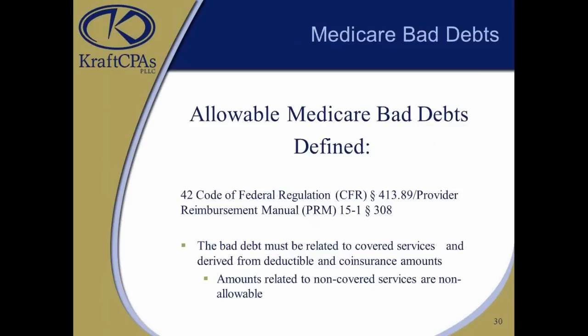Now we're going to go to Medicare bad debts — a hot topic that will continue to be one, given all the budgetary concerns of Medicare cuts. One recommendation from the Simpson-Bowles Act was to reduce reimbursement to 0%. So it's important to know what makes up an allowable Medicare bad debt. There are four criteria. First, it must be related to your covered services — if you get a denied day for a stay, you can't claim that deductible as a bad debt.